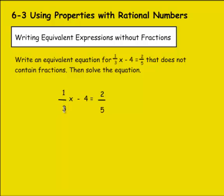So I know that 3 goes into 15 and so does 5. So let's multiply everything in this times 15. If I do this times 15, that would be 15 times 1, which is 15, divided by 3 is 5. So 5x minus 4 times 15. 4 times 15 is 60, so minus 60 equals 2 fifths times 15. 2 times 15 is 30, divided by 5 is 6.